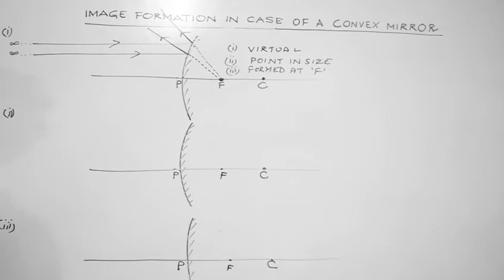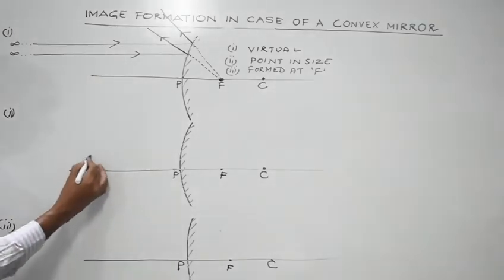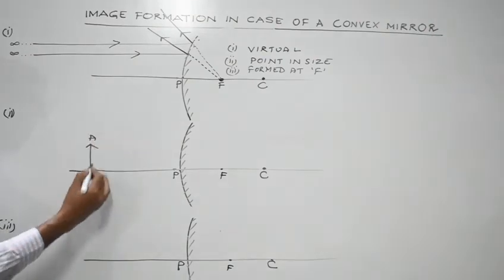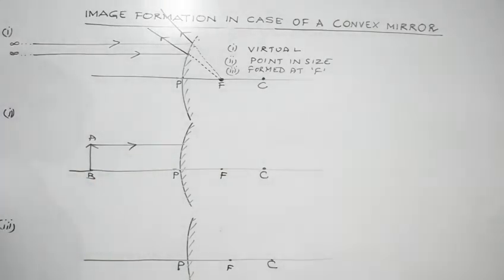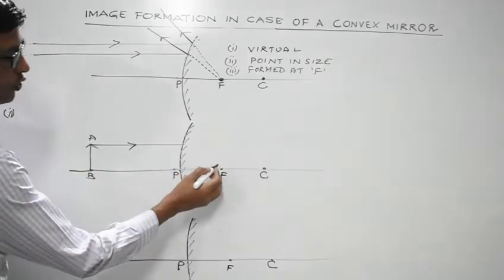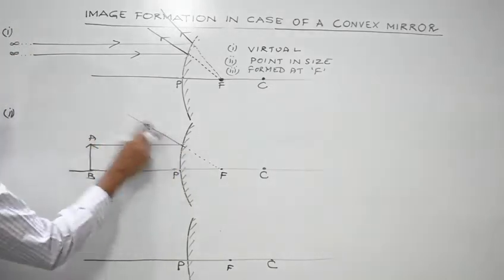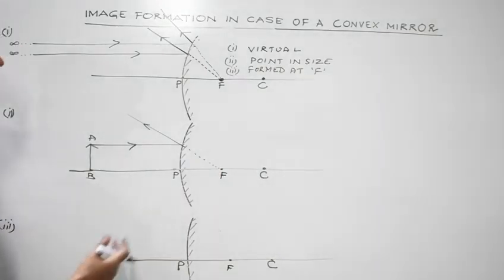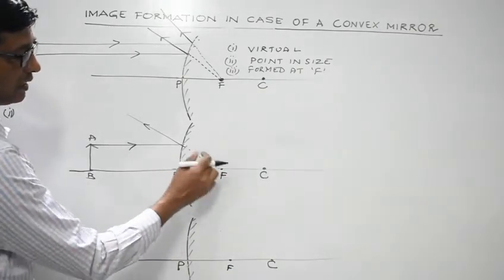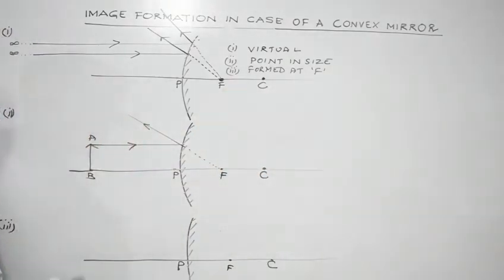Now consider the object placed much closer — somewhere in front of the mirror. The first ray is drawn parallel to the principal axis. After reflection, it appears as if the reflected ray is coming from the focus. Lines drawn behind the mirror should be shown as dotted lines, representing imaginary lines. The second ray is incident at the pole of the mirror.